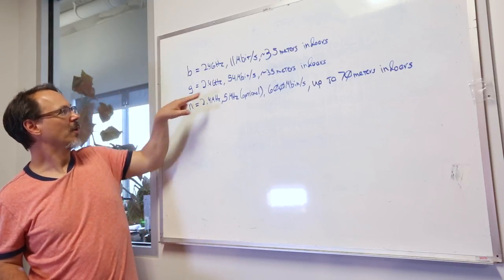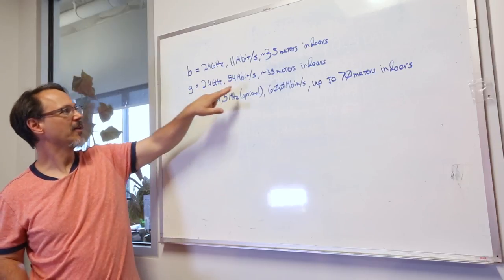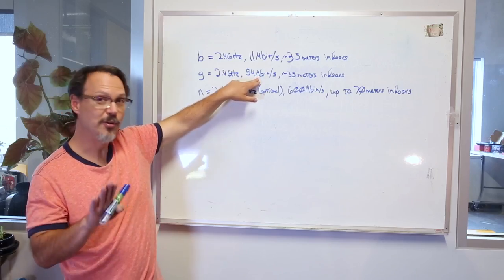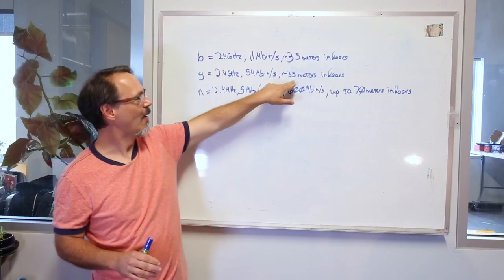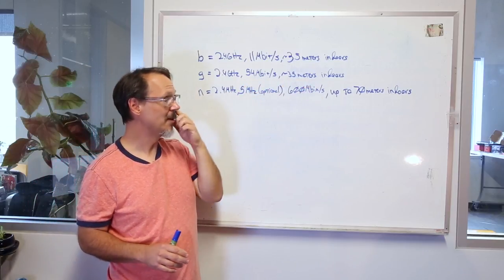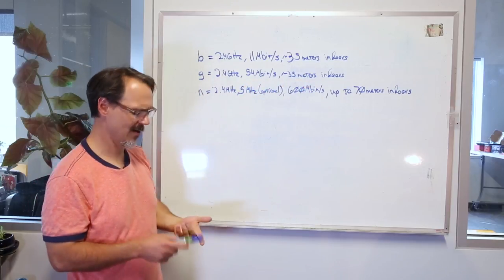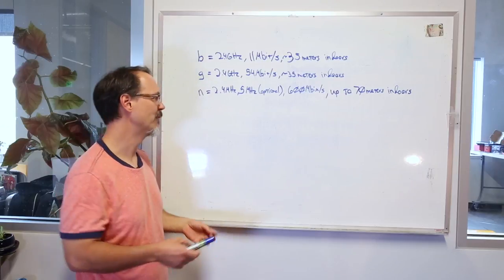G will also run on 2.4 gigahertz, will get you up to 54 megabit per second, also about 35 meters indoors. And of course that depends on all your environmental factors that we talked about before.